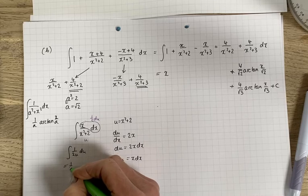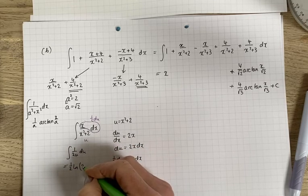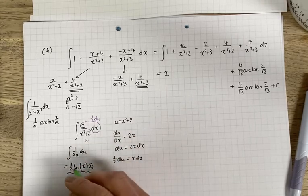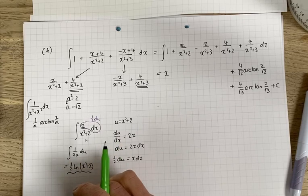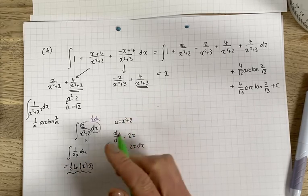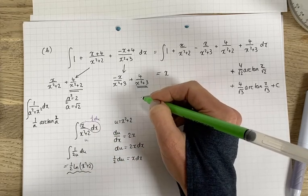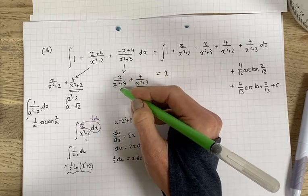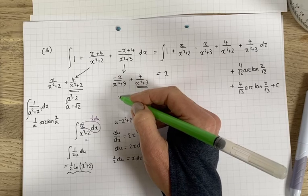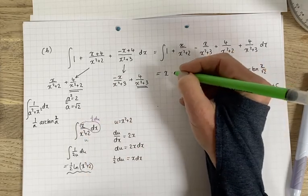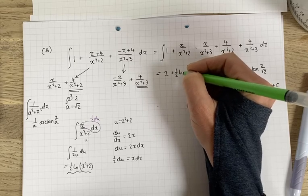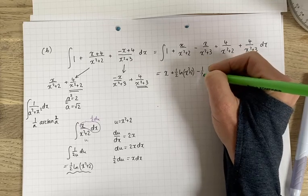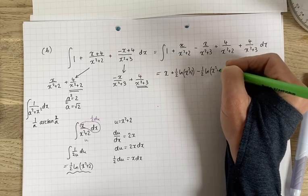So that will go to a half ln, but we've got x squared plus 2. Replace my u straight away with this. Okay, so if you have a go at doing exactly the same with the second one, the second one here will go to minus a half ln x squared plus 3. So let's write it down. So it's going to be a half ln x squared plus 2 minus a half ln x squared plus 3.